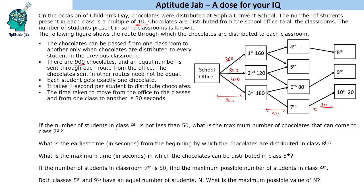The first question says: if the number of students in class 9th is not less than 50, what is the maximum number of chocolates that can come to class 7th? First, 300 minus 160 distributed means 140 will be distributed in two routes. Then 300 minus 180 coming to this place means 120 will be distributed in these two routes.